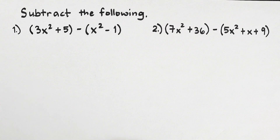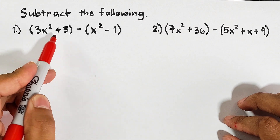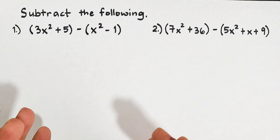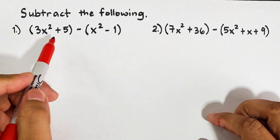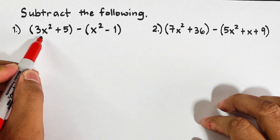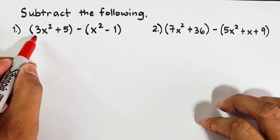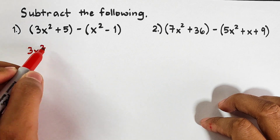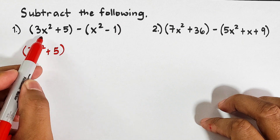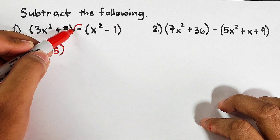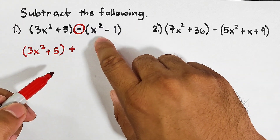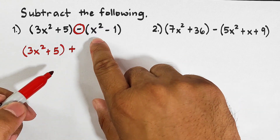So what we have here for the first example is the quantity of 3x squared plus 5, minus x squared minus 1. This is your first polynomial and this is your second polynomial. The first thing you need to do is to copy the first polynomial: 3x squared plus 5. Then after copying the first polynomial, we will change the operation to addition — this will become plus.